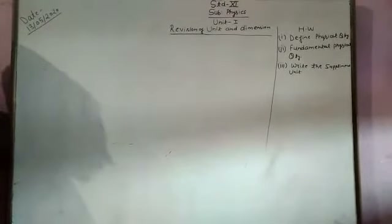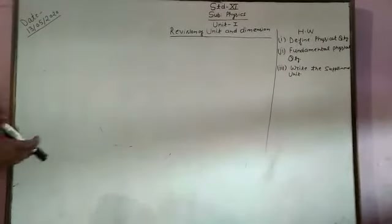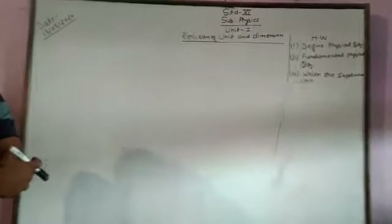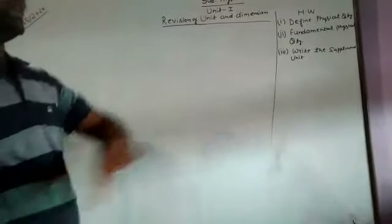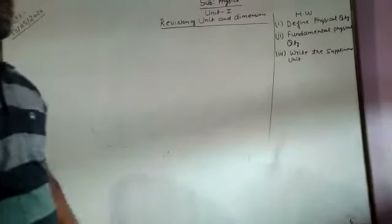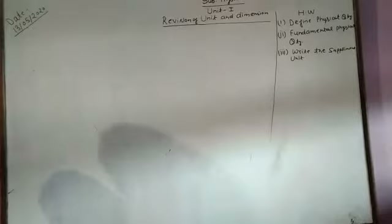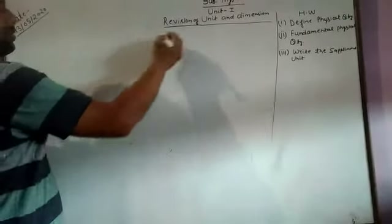First, we have to describe the physical quantities. What are physical quantities? Those quantities which are measurable are called physical quantities.